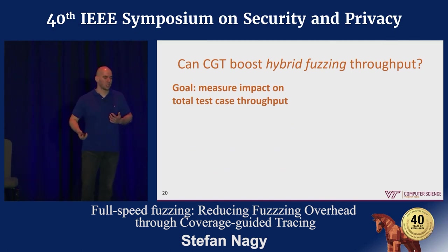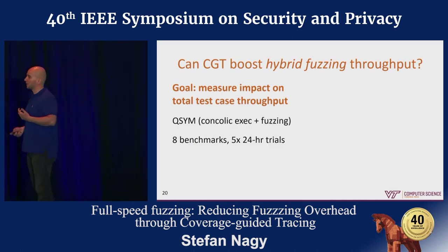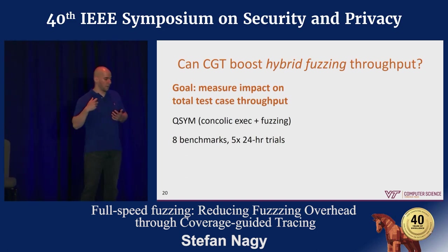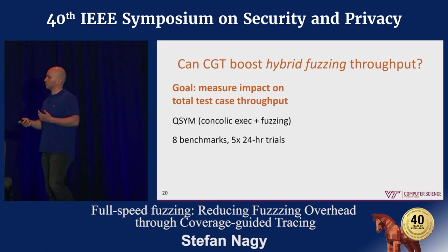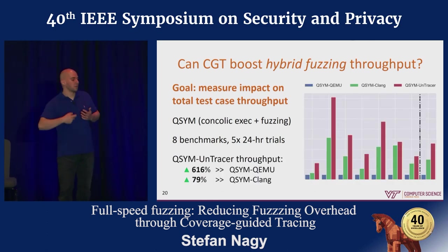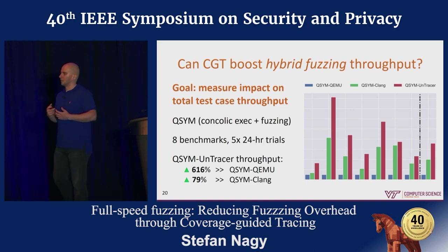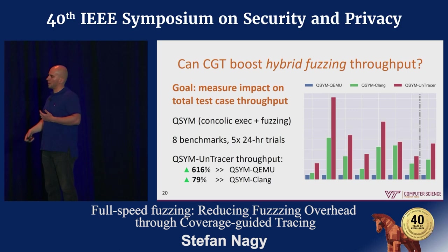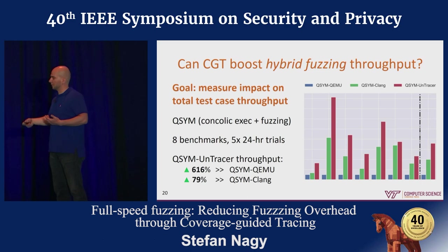Our next question was: how does this reduction in overhead impact overall fuzzer throughput? Our goal was to measure the total number of test cases executed over a reasonable amount of time. We looked at 24 hours across eight benchmarks, five trials each. We used QSim, a very advanced hybrid fuzzer similar to Driller, which combines concolic execution alongside naive fuzzing approaches. We discovered that coverage-guided tracing's dramatic reduction in tracing overhead — by only tracing coverage-increasing test cases — gave it a decisive advantage in producing more test cases overall than QSim using QEMU to trace every test case, and QSim using AFL's assembly-time white-box tracing for every test case.